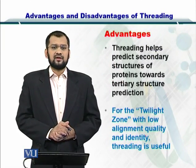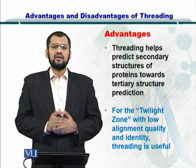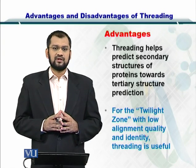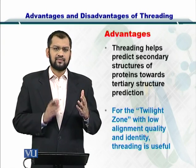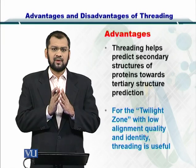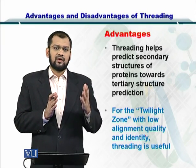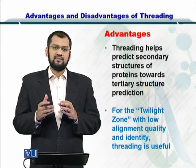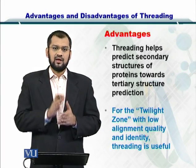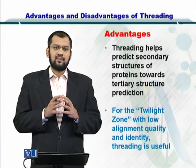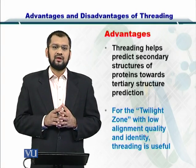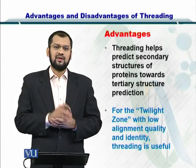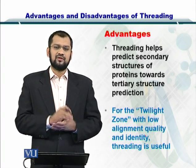Coming back to the issue of advantages and disadvantages — threading or fold recognition is an extremely useful strategy for predicting the tertiary structure of proteins. On one side we have homology modeling, and on the other side is ab initio modeling. Threading is a compromise between the two. In homology modeling, we rely heavily on the template, while in ab initio we rely on energy minimization without using a template. For fold recognition, we find the optimal secondary structures, or folds, best suited to your sequence, allowing a mix-and-match of different folds as structural elements.